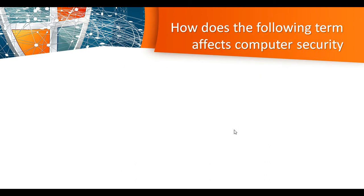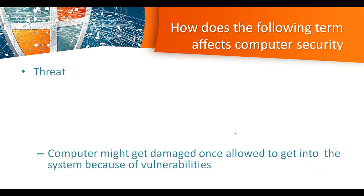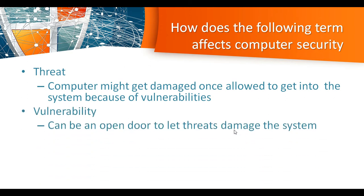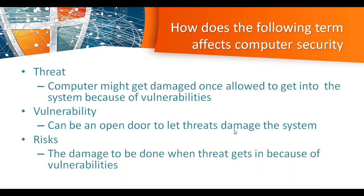Let's take question number 1: How does the following term affect computer security? First, threat — a computer might get damaged once a threat is allowed to get into the system because of vulnerabilities. Vulnerability — it can be an open door to let threats damage the system. And risks — the damage to be done when a threat gets into the system because of vulnerabilities.